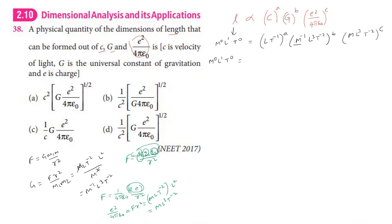Equating dimensions on both sides: M power (−B + C) equals M⁰, so C equals B. L power (A + 3B + 3C) equals L¹. T power (−A − 2B − 2C) equals T⁰.